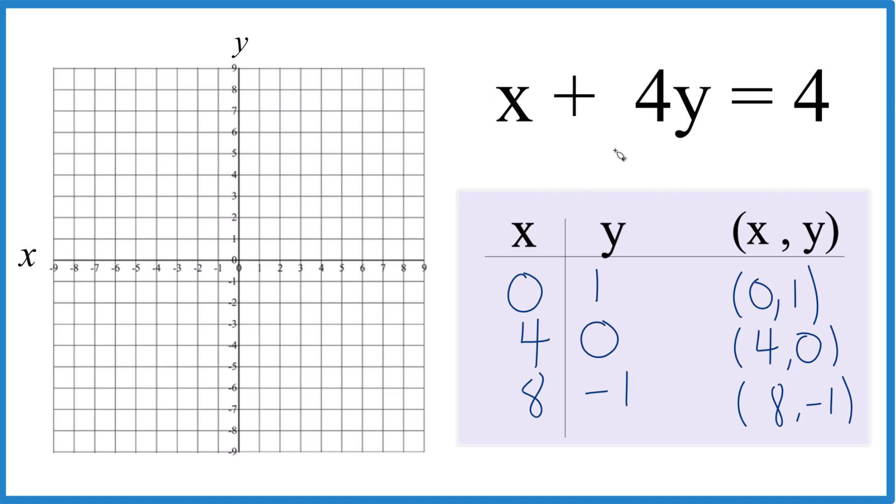x plus 4y equals 4. And again, I just chose x is zero because I think it would fit on the graph and give me whole numbers, or y is zero. You can choose whatever you want, it's going to be on that line. So let's graph it.